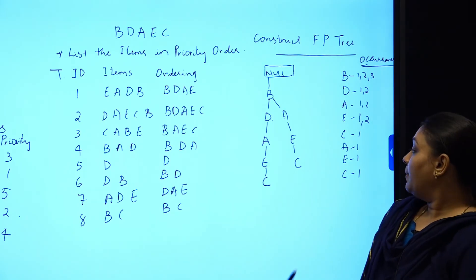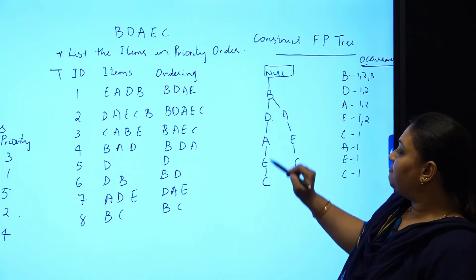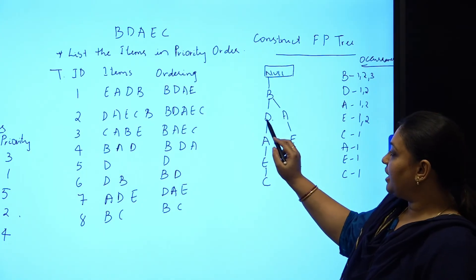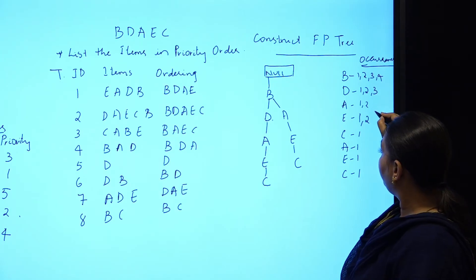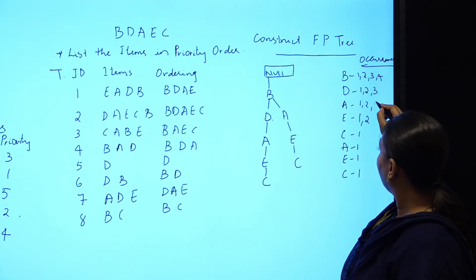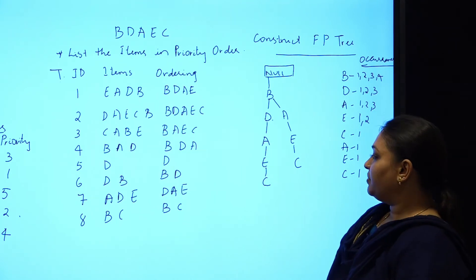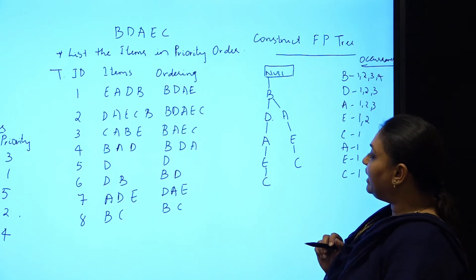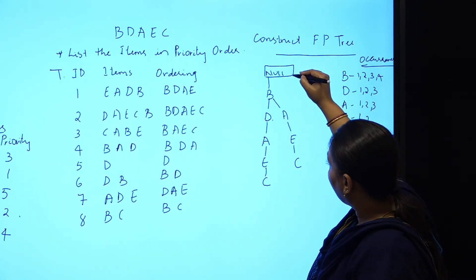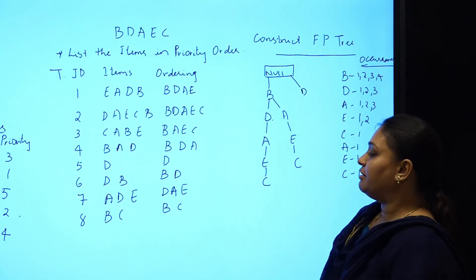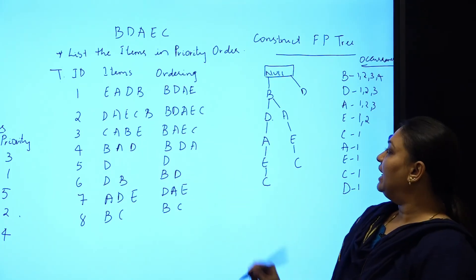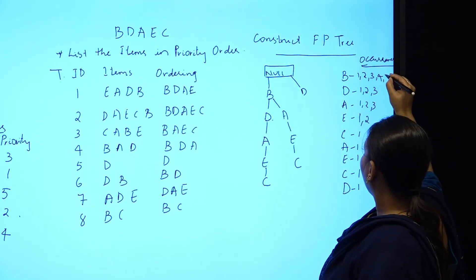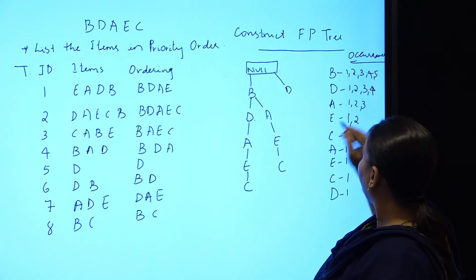For the fourth transaction (B, D, A), the path B→D→A already exists, so B becomes 4, D becomes 3, A becomes 3. For the fifth transaction (only D), D does not appear as a direct child of null, so a new branch null→D is created with D=1. For the sixth transaction (B, D), B→D already exists, so B becomes 5 and D becomes 4.